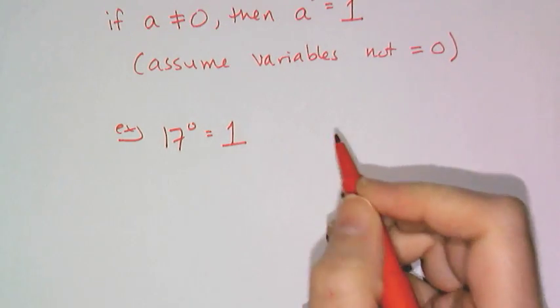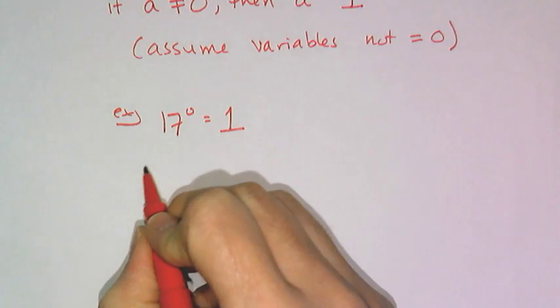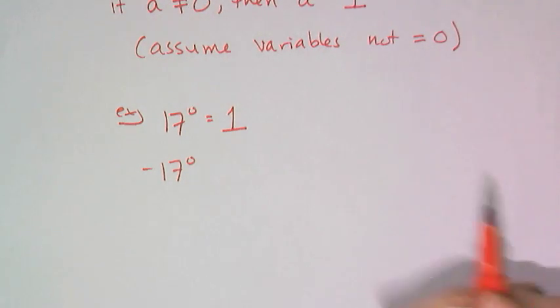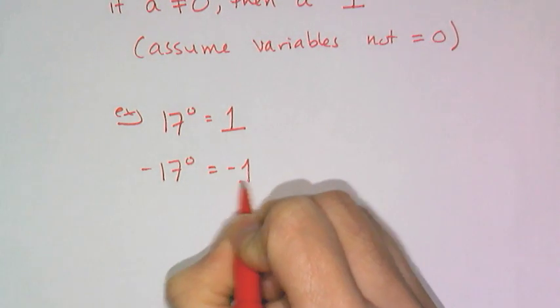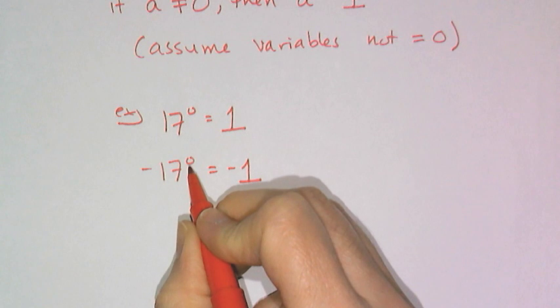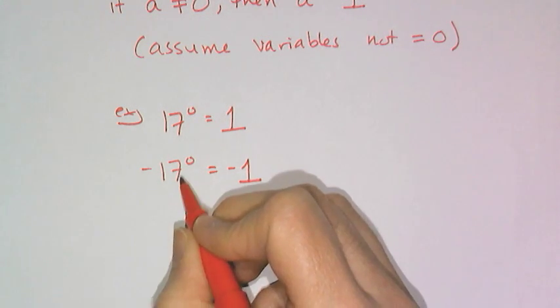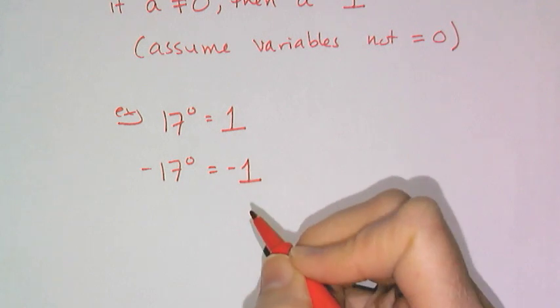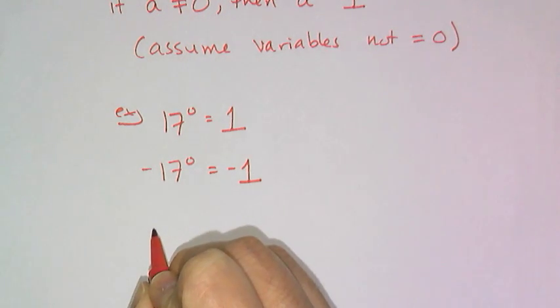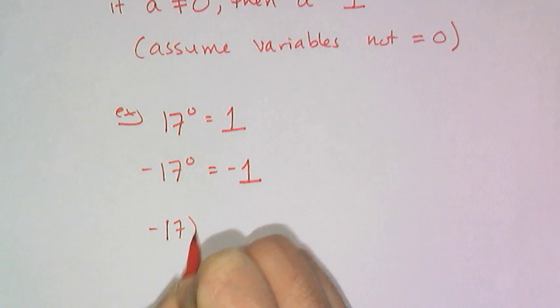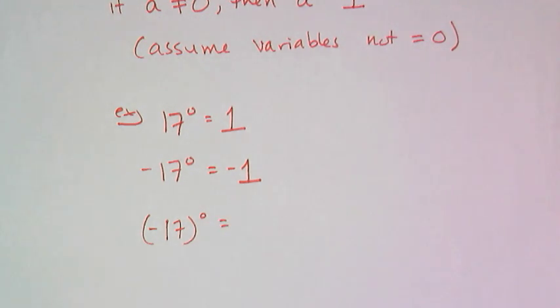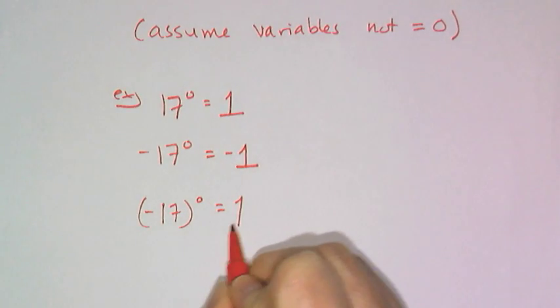So for example basic if I have seventeen raised to the zero power that's just going to be a one. Now don't forget the most missed concept because if I see this that's not one that's negative one. Because the zero power only applies to the seventeen and I want the opposite of seventeen to zero which is negative one. And then if I put that negative seventeen in parentheses and raise it to the zero power then that again is one.